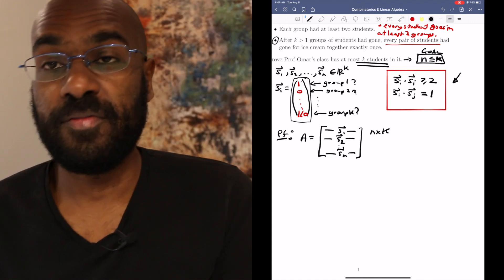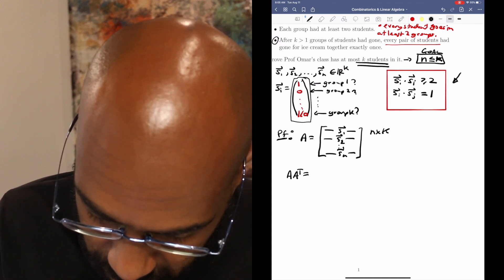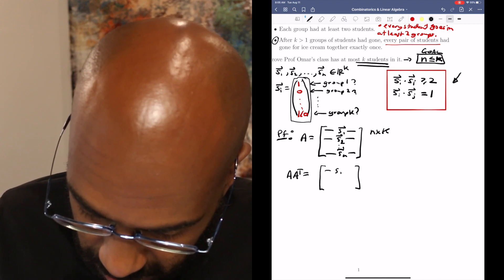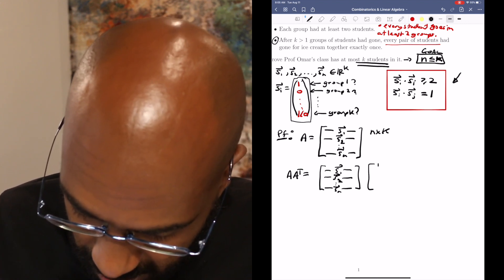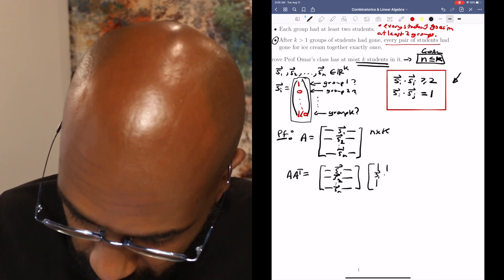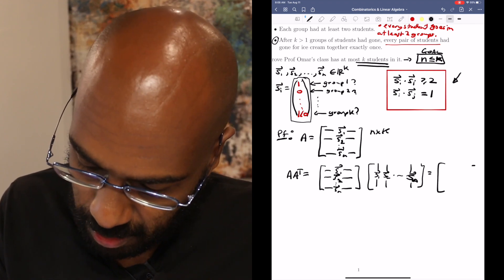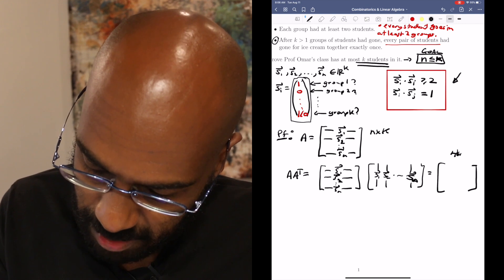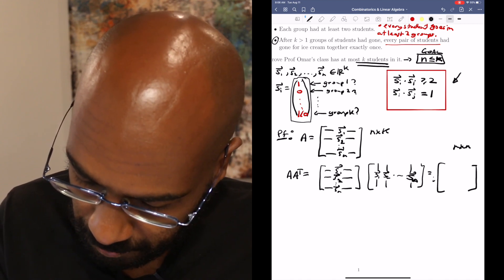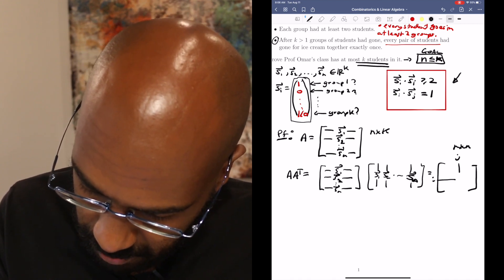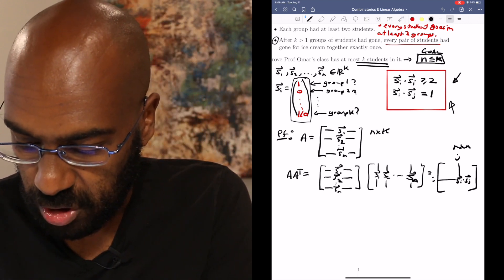Okay, now the information we have is about dot products of the pairwise vectors. We can take a look at that by multiplying the matrix A by its transpose. So we get the matrix that we had together with its product when we have these vectors, the SIs, in the columns instead of the rows. Okay, so what does this matrix look like? It's going to be an N by N matrix whose IJth entry, so we take IJ is going to look like SI dot SJ. And that's exactly what we have information about right over here.